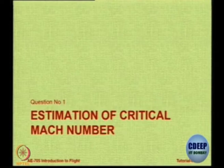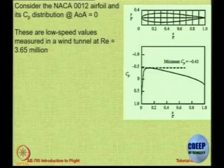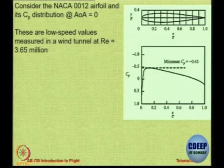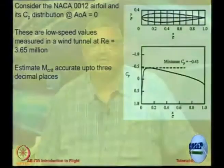Let us first start with estimation of critical Mach number. This is a real-life example: we take the NACA 0012 aerofoil at 0 degree angle of attack, and the CP distribution is as shown. Notice that the minimum CP value is minus 0.43, obtained from a wind tunnel test at a low Reynolds number of 3.65 million. So this is a low-speed CP minimum value, called CP0, equal to minus 0.43. Our job is to estimate the critical Mach number for this aerofoil accurate up to 3 decimal places.